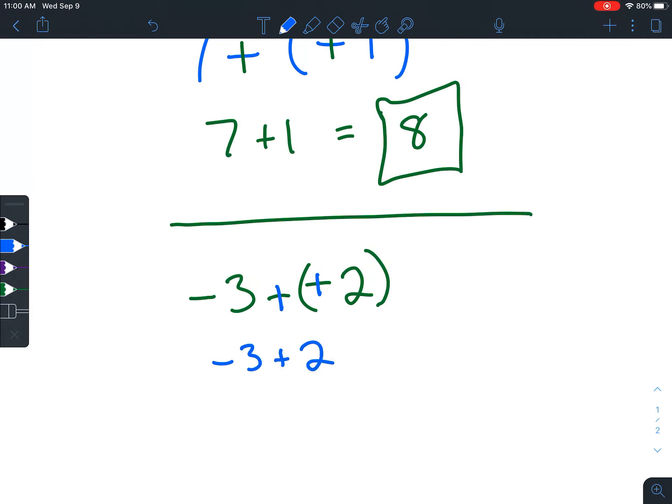And then you can think of this as different signs, which means I subtract to get 1. 3 is larger and 3 is negative, so it would be negative 1.